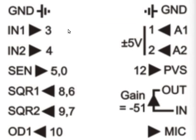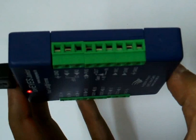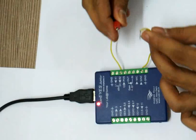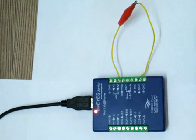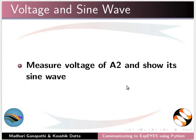I will discuss the channels on the top panel of the device. On the top panel, each terminal is assigned to a specific channel number. For example, channel 1 is assigned to A1 and channel 2 to A2. The device has screw terminals on either side. To make the connection, we insert wires into the terminals and tighten the screws. Here, A2 is connected to sine. This is the circuit diagram.